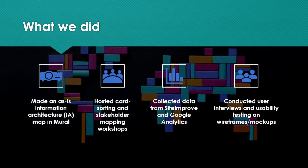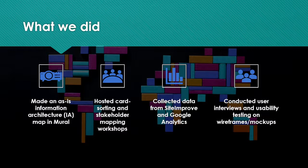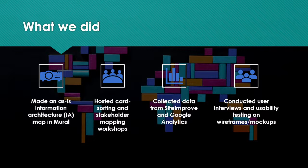We hosted a card sorting workshop and a stakeholder mapping workshop with our clients, which allowed them to assess where information on their website should logically be. It also gave us the opportunity to confirm who the key stakeholder groups were to engage in phase one and map out a timeline. We learned this was very important because prior contractors had not engaged some of the right user groups when they should have, and as a result the contract came to a halt.